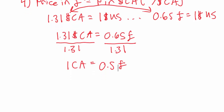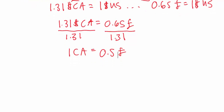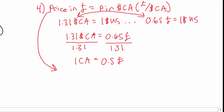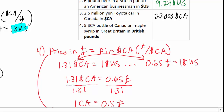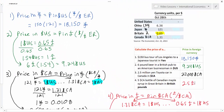Now we can find the price of the 5 Canadian dollar bottle of maple syrup in terms of British pounds. The price in pounds equals 5 Canadian dollars times the exchange rate of 0.5 pounds per Canadian dollar, giving us 2.5 British pounds. So a 5 Canadian dollar bottle of maple syrup will cost a British consumer 2.5 pounds. To find that, we used the data from our table showing the value of US dollars in terms of both pounds and Canadian dollars.